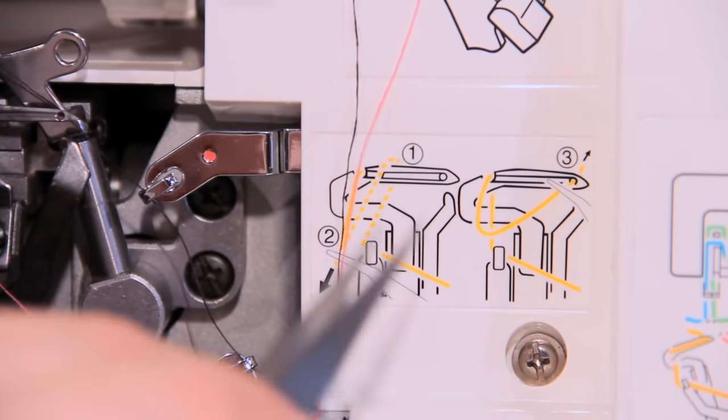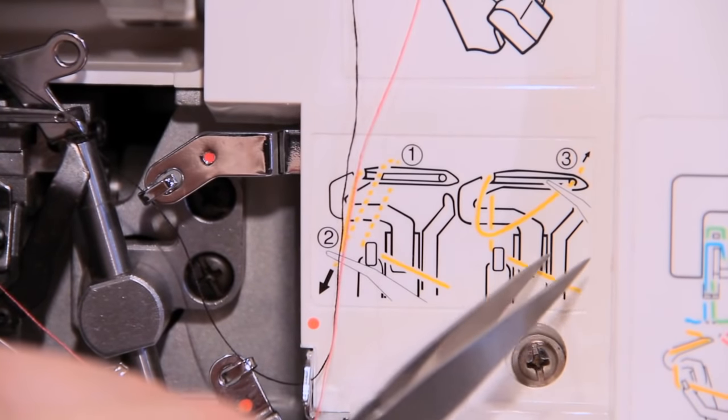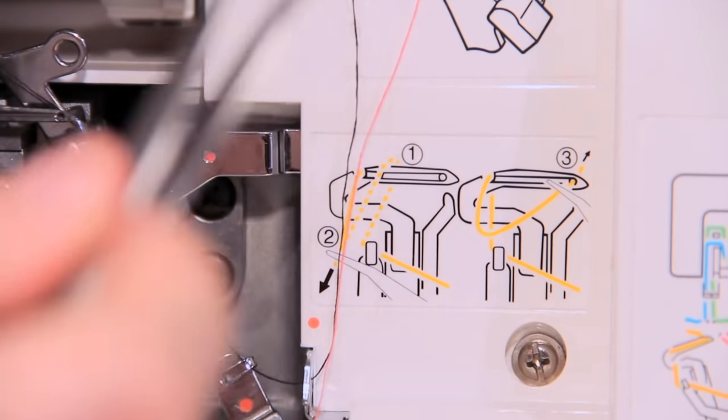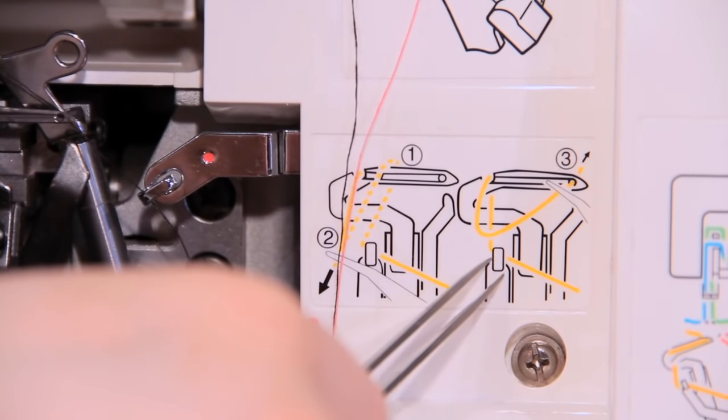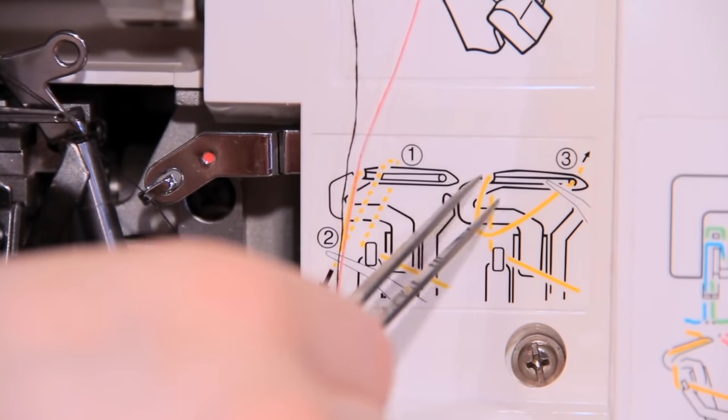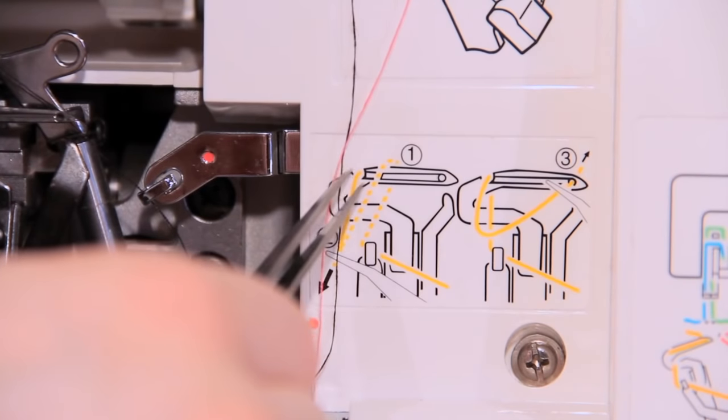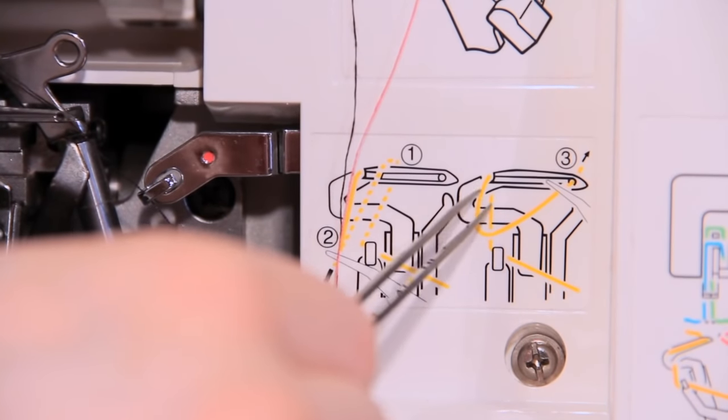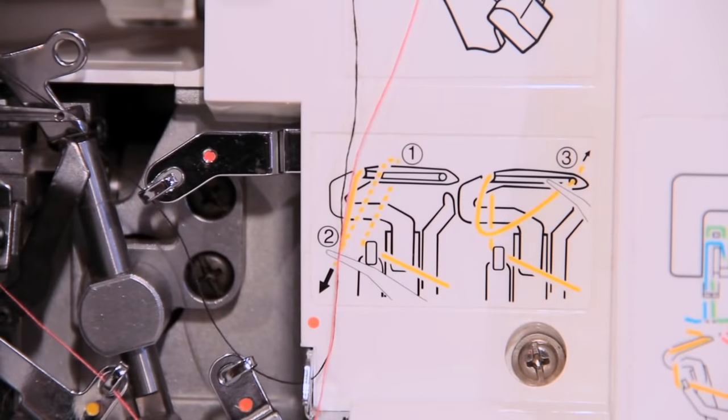So this is a little diagram that's on my machine. It's a little bit helpful. Basically we're going to slide the thread over the lower looper needle. We're going to slide it over the lower looper needle and then we're going to pull it through the cutout and then bring it back up through the eye, if that makes any sense.